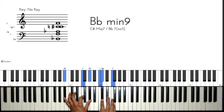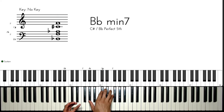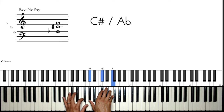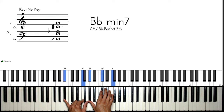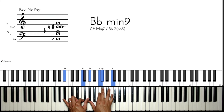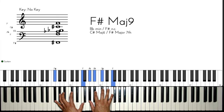For the six I like playing a B flat minor nine. This is a B flat minor seven, which is simply a C sharp major over a B flat. I add the fifth down here and all I do is add the ninth or the second of B flat, which is C.